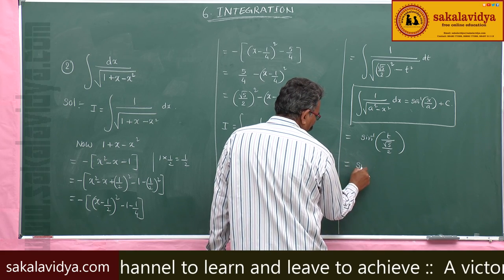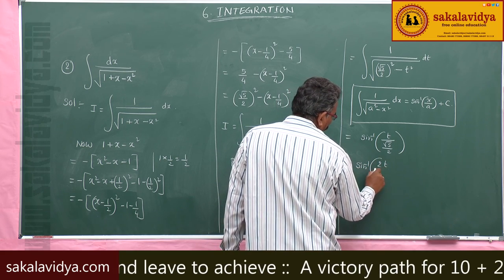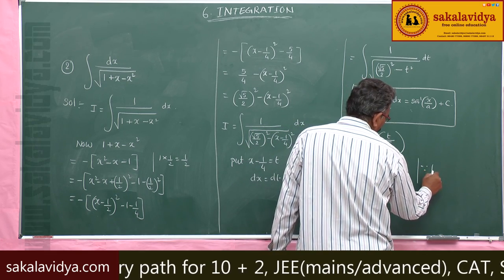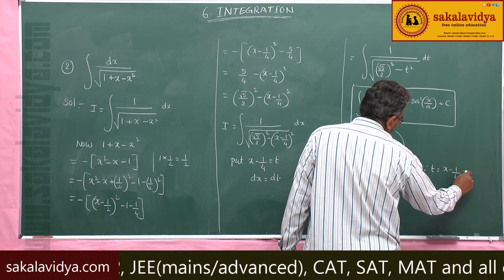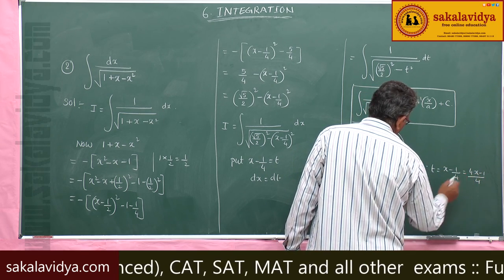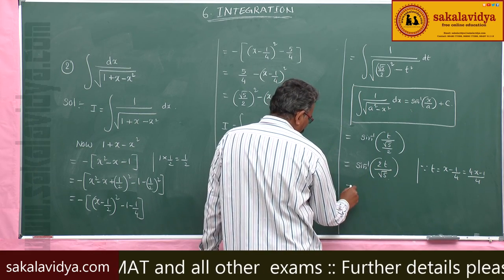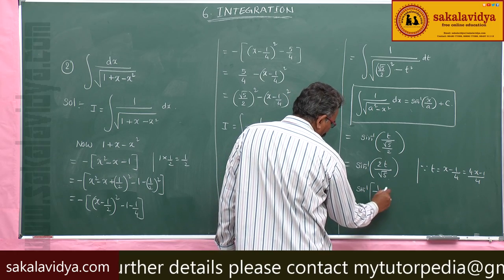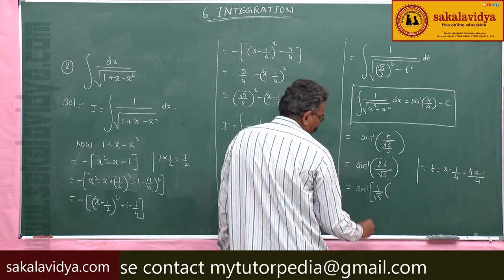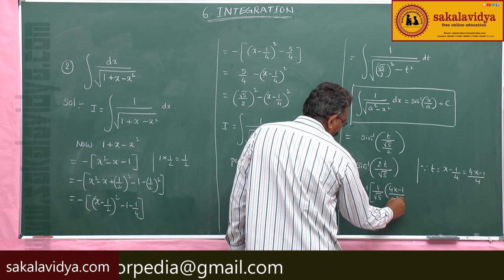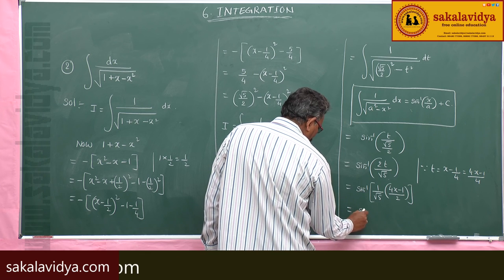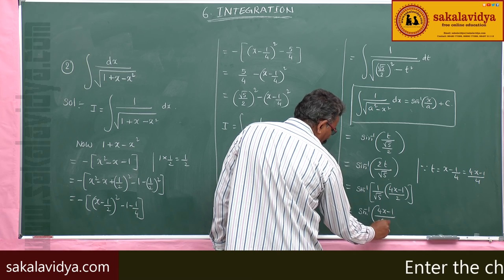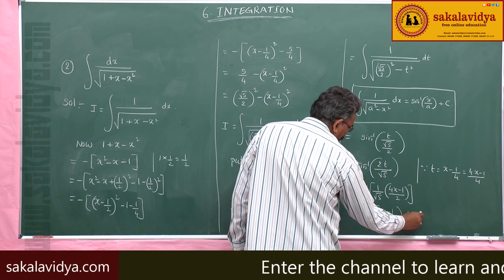Using the standard integral, this can be written as sin⁻¹(t divided by √5/2), which equals sin⁻¹(2t/√5). Since t equals x minus 1/4, which can be written as (4x minus 1)/4, the expression 2t equals (4x minus 1)/2. So the final answer is sin⁻¹((4x minus 1) divided by 2√5) plus constant of integration.